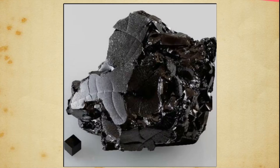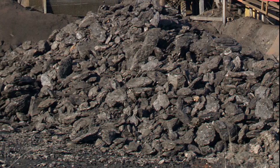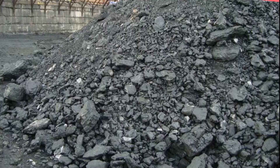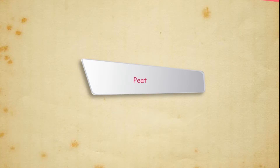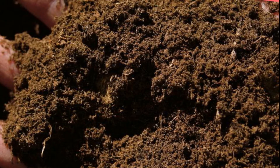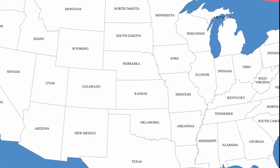Lignite: It contains only 40% carbon since it contains a large amount of moisture. It is not found suitable for use in industries. Peat: It consists of partially decomposed vegetable matter. It is hard to burn as it emits little heat and a great deal of smoke.